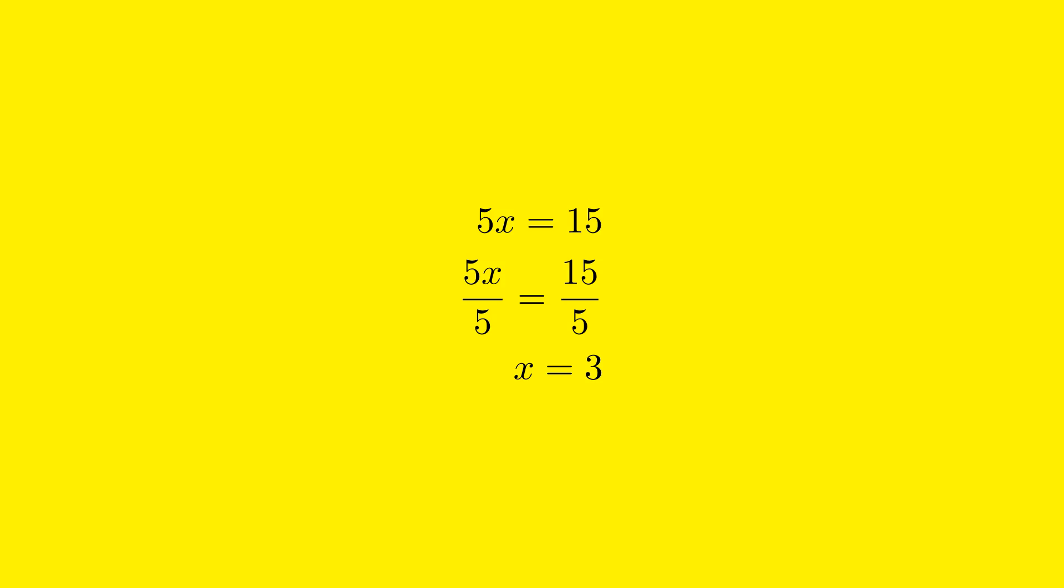On the left side, 5 divided by 5 simplifies to 1, so we are left with just x. On the right side, 15 divided by 5 equals 3. So after performing the division, we have x equals 3. This means that the value of the variable x, which satisfies the original equation, is 3.